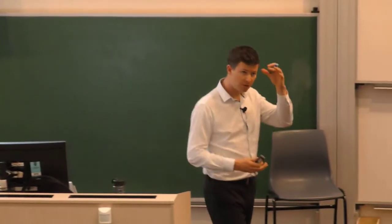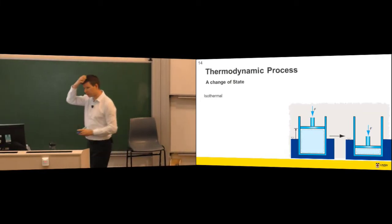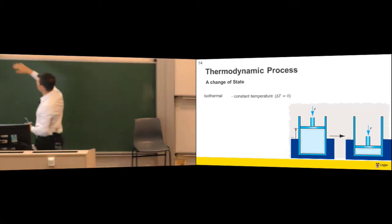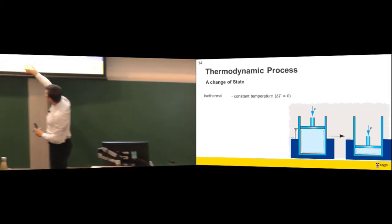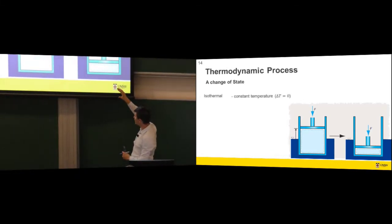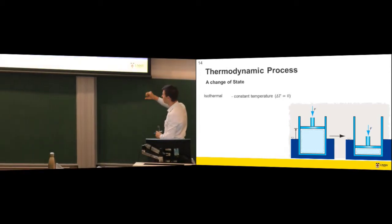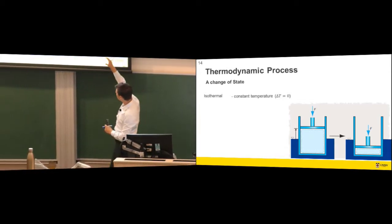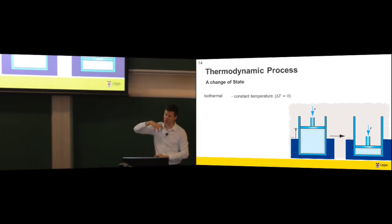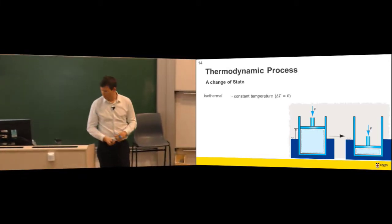Isothermal hopefully makes good sense. This is a process that takes place at constant temperature. Okay? So, in this case, I've drawn some sort of heat sink around the cylinder. Maybe the process is taking place slow enough. So, if that happened very quickly, the gas would heat up. We'll talk about why that happens later. But if it happens slow enough that the temperature soaks into the heat sink, then the temperature can remain constant throughout the process. Not the only way to have an isothermal process, but it is one.